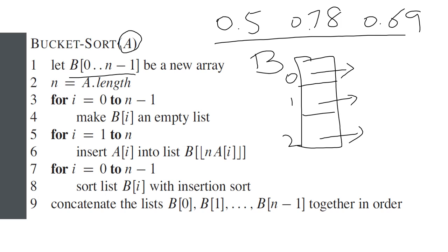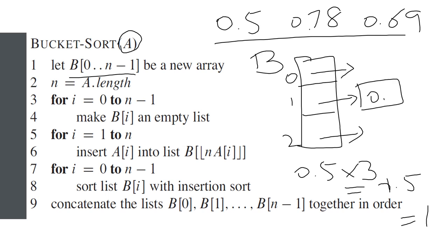For example, the first element is 0.5. You multiply 0.5 by n, and the n value is 3, so the answer is 1.5. Taking the floor of 1.5 gives 1. So this means that you will insert element 0.5 into the first bucket, which is list index 1.